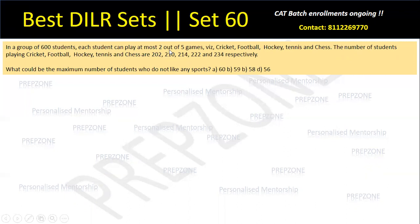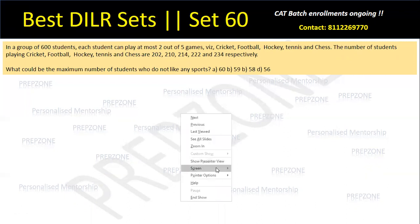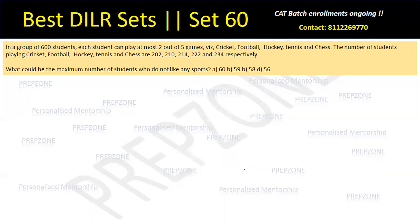Let's read the set. In a group of 600 students, each student can play at most two out of five games. Every child will play one or two games. The number of students playing cricket, football, hockey, tennis, and chess are given. These are overlapping cases.